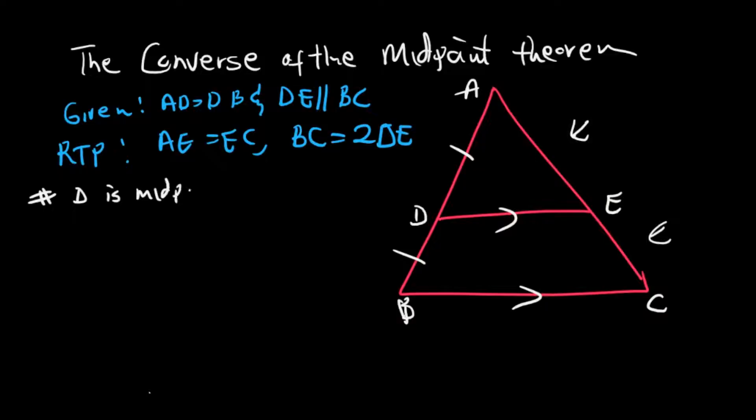The first thing you're going to do is state that D is the midpoint of AB. The reason: AD equals DB, given. The second point: DE is parallel to BC, reason given.